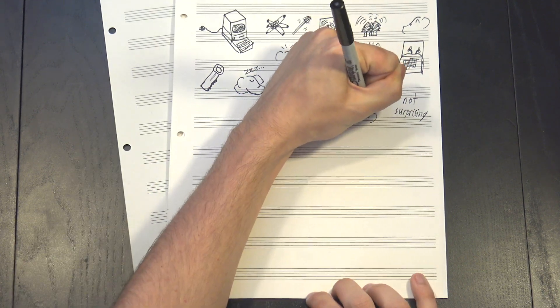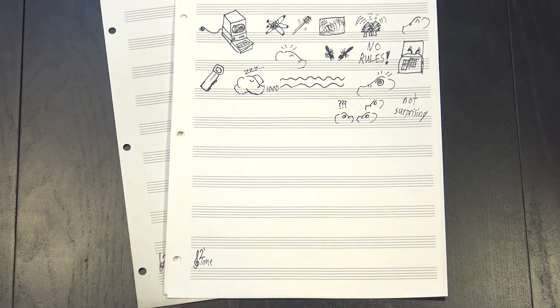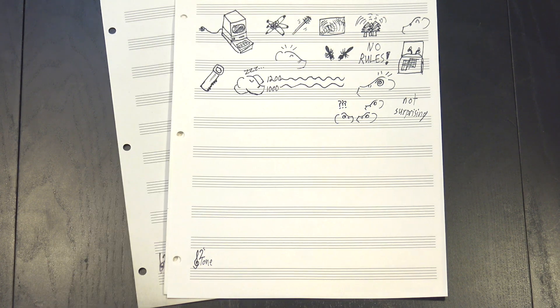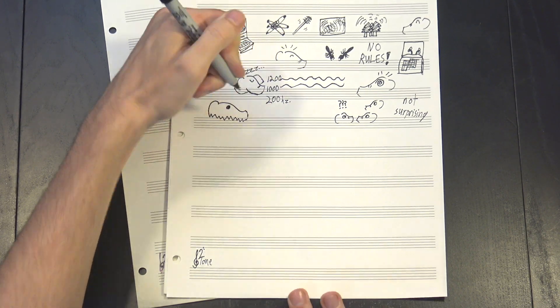Our brains recognize this as part of a harmonic series, and they start trying to identify the fundamental underneath it all. In this case, the tones we heard were 1000 Hz and 1200 Hz, and our ear identified them both as multiples of 200 Hz, so it filled in a ghostly version of that note.